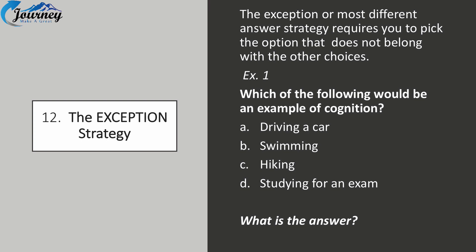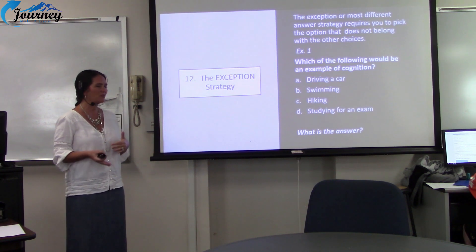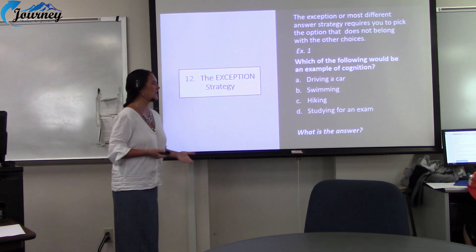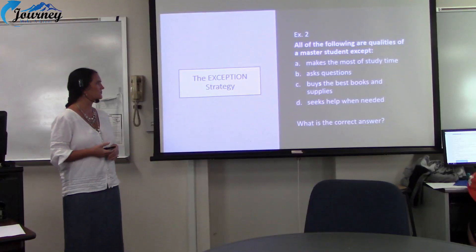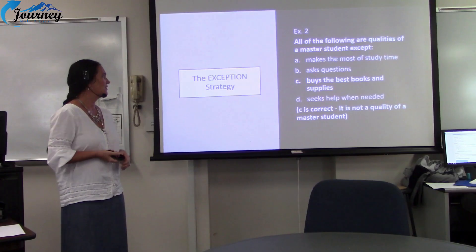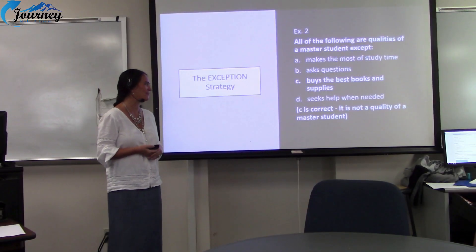The Exception or Most Different Answer Strategy requires you to pick the option that does not belong with the other choices. Example: 'Which of the following would be an example of cognition?' — driving a car, swimming, hiking, studying for an exam. Studying for an exam is the most different option from all the others. Another example: 'All of the following are qualities of a master student, except...' — C is the correct answer because the master student does not have to buy the best books and supplies to be a master student.